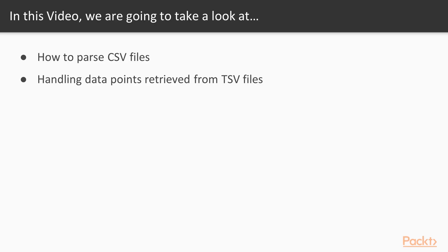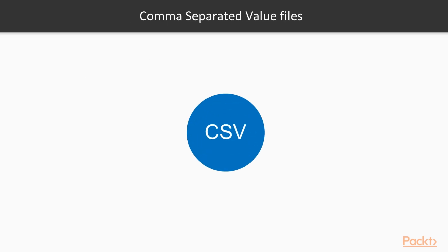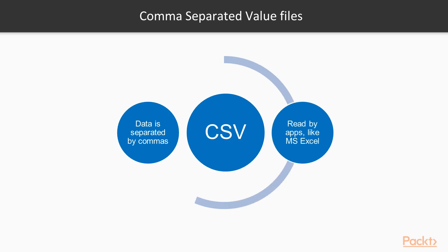In this video, we are going to take a look at how we can parse CSV files and handle data points retrieved from TSV files. Another very common file type that data scientists handle is Comma Separated Value files, where data is separated by commas. CSV files are very popular because they can be read by most spreadsheet applications, such as Microsoft Excel.